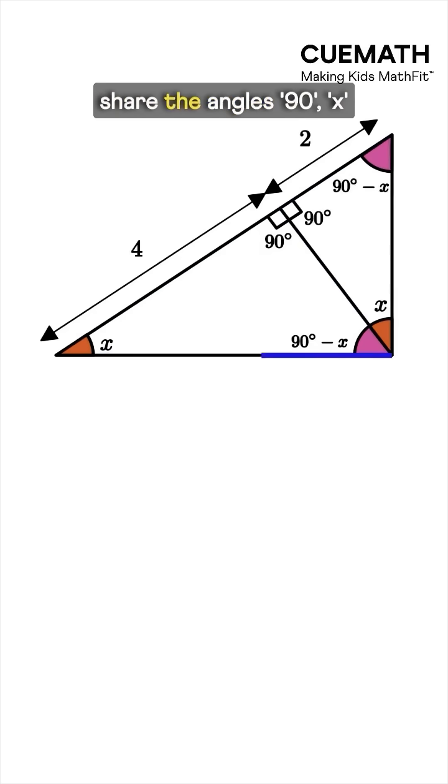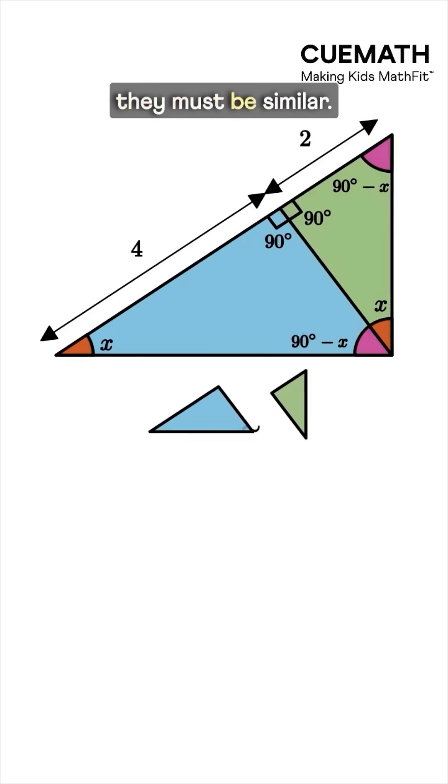Since both triangles share the angles 90, x, and 90 minus x, they must be similar.